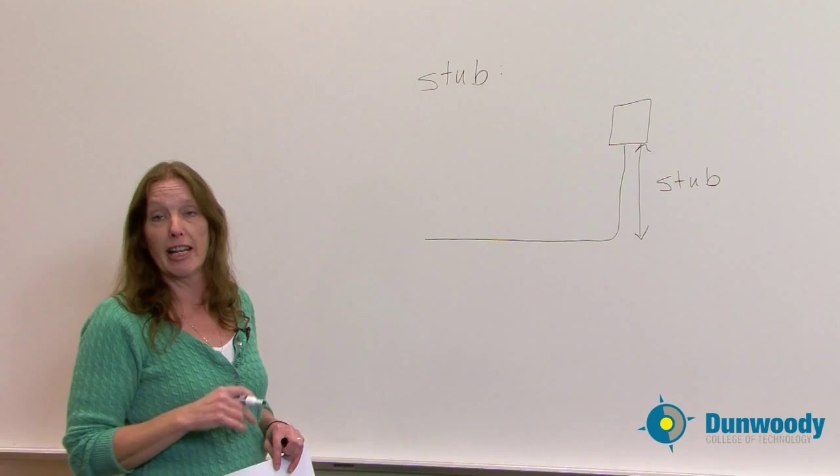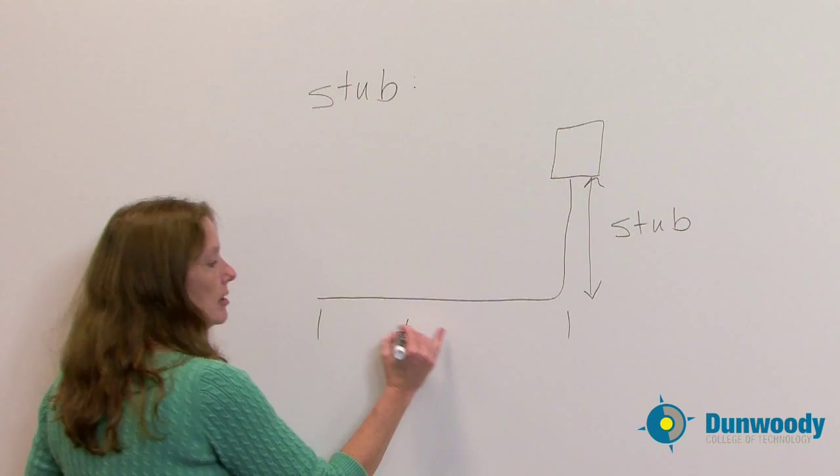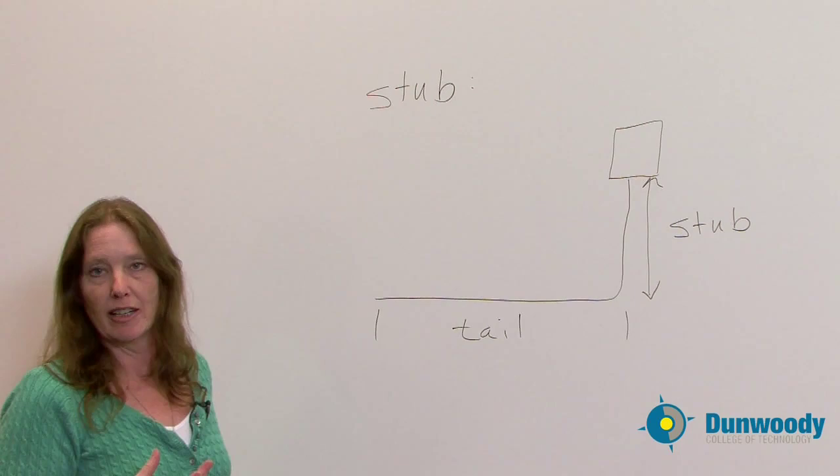We have another term called the tail. The tail is the back end of a 90 degree bend, and normally is the longer piece of conduit that we have.